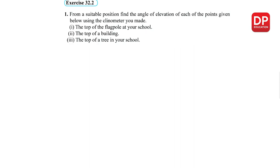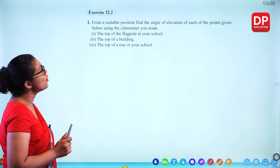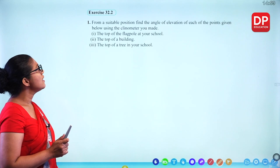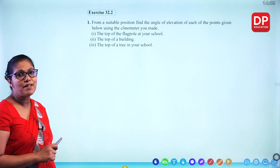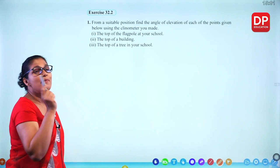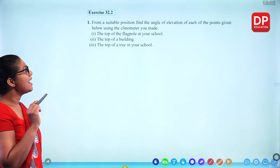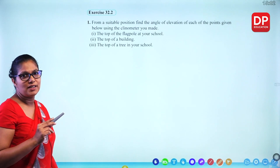Exercise 32.2: from a suitable position, find the angle of elevation of each of the following points using the clinometer you made — the top of the flagpole at your school, the top of a building, and the top of a tree. This is an activity to do at school; measure the angles using the clinometer.